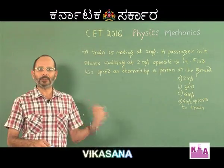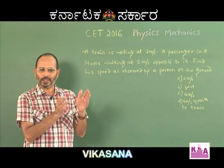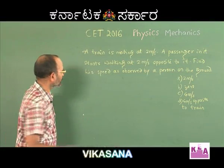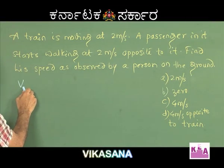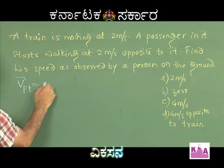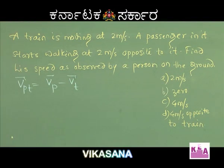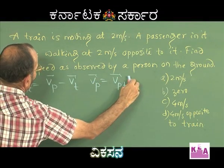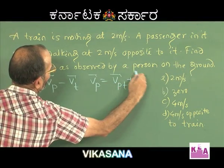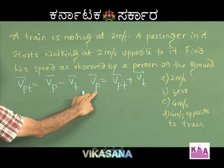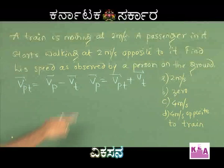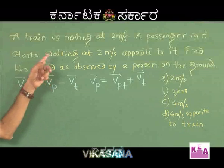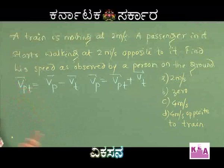We want the speed of the passenger with respect to the ground. The velocity of the passenger with respect to the train equals the velocity of the passenger minus the velocity of the train. Rearranging: velocity of the passenger equals velocity of the passenger with respect to the train plus velocity of the train. The velocity of the passenger with respect to the ground is the absolute velocity; the train's velocity of 2 meters per second is with respect to the ground since the train moves on the ground.